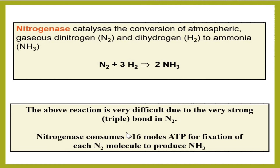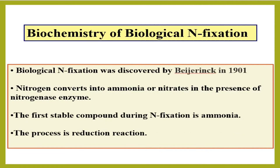Industrially, nitrogen fixation requires high temperature, high pressure, and catalytic substances. But plants and microorganisms only require nitrogenase and 16 moles of ATP to convert one nitrogen molecule into two molecules of ammonia.